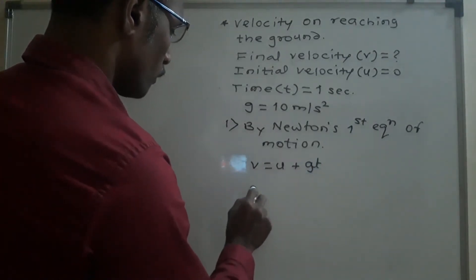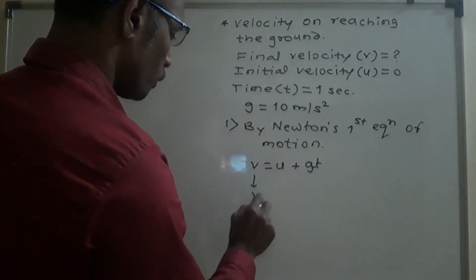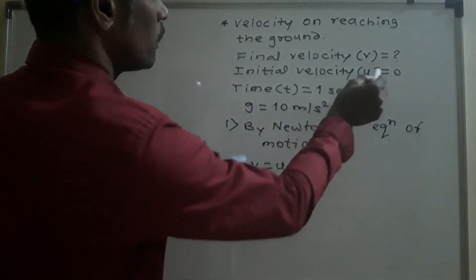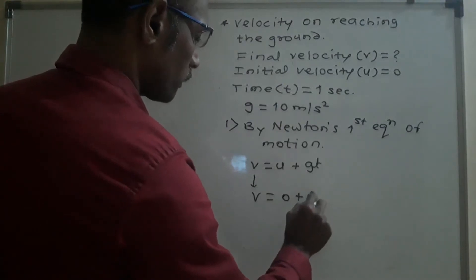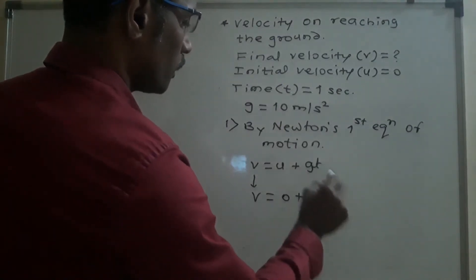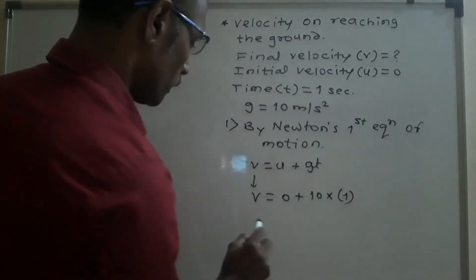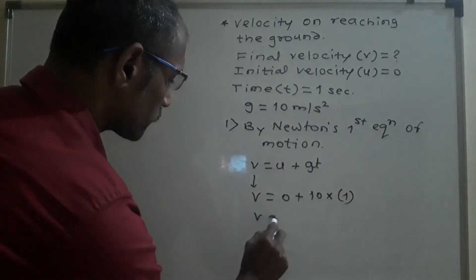Now v, we don't know, to be found. u is 0 plus g into t, 1.